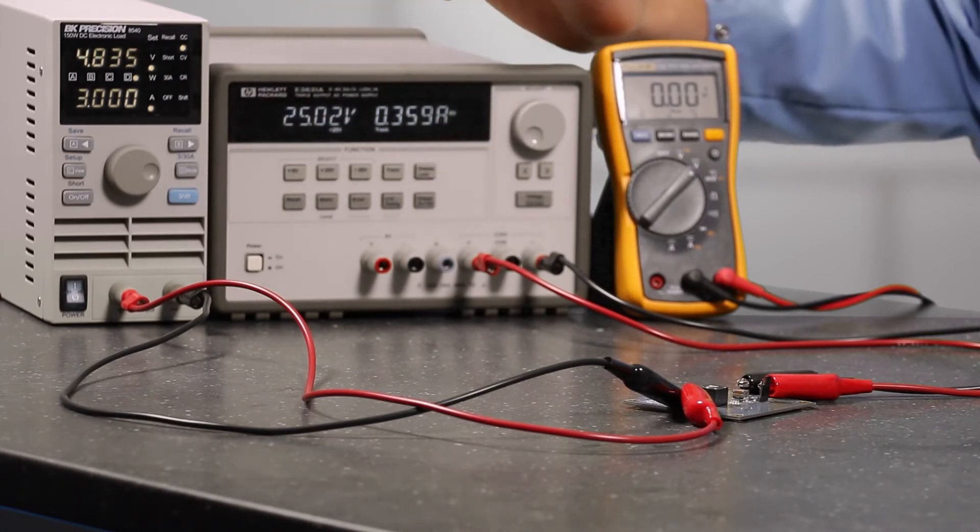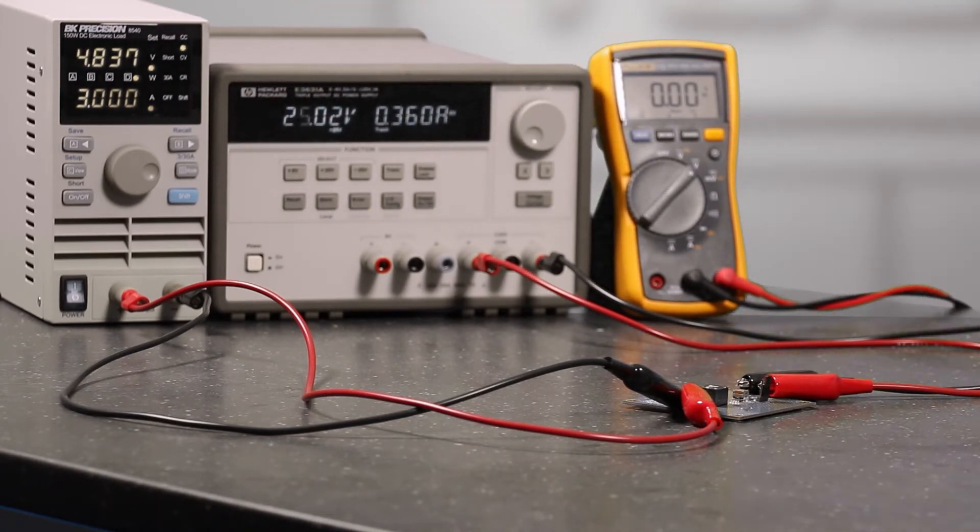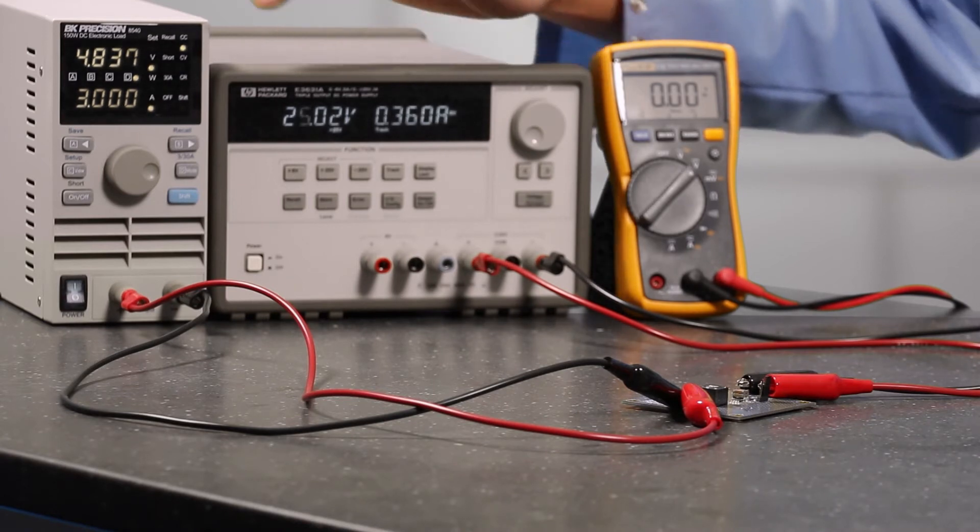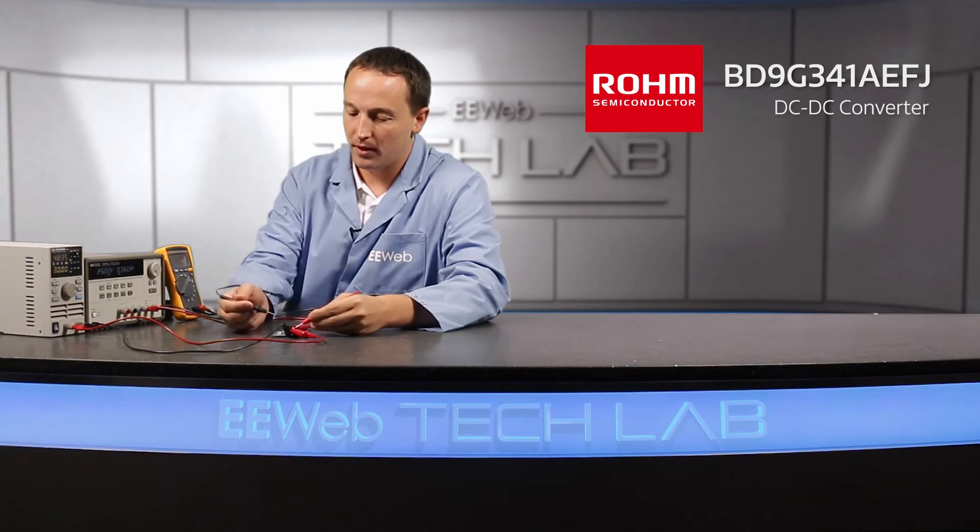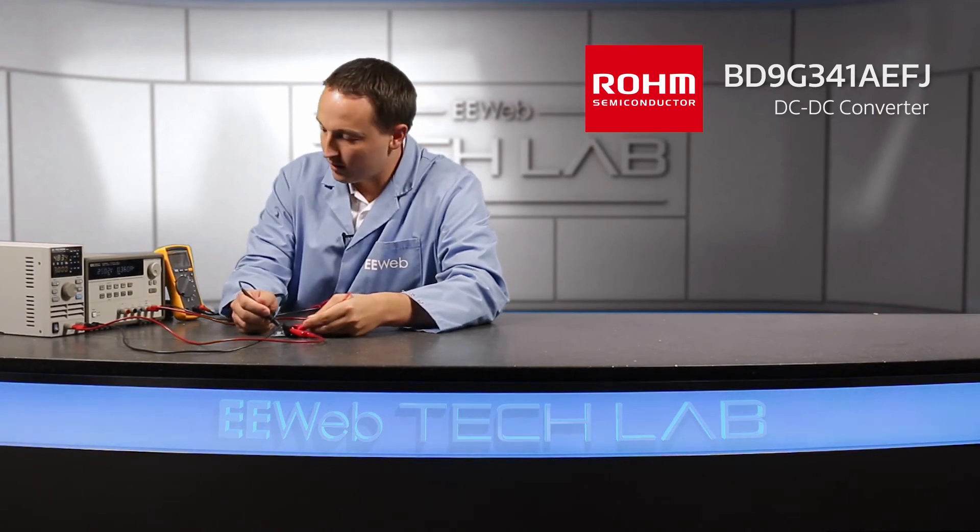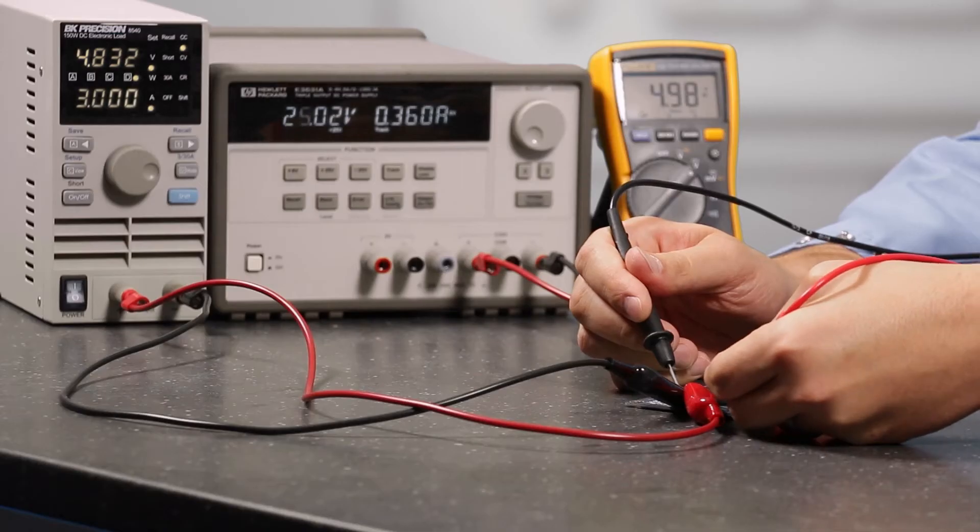So if I turn this on, you can see that we're at 25 which is really 50 volts. We're drawing 3 amps. This says 4.8 volts. So if we probe the output you can see on the meter that we're actually at 5 volts.